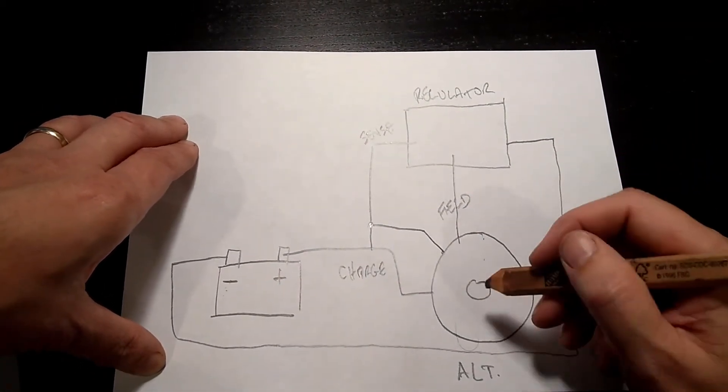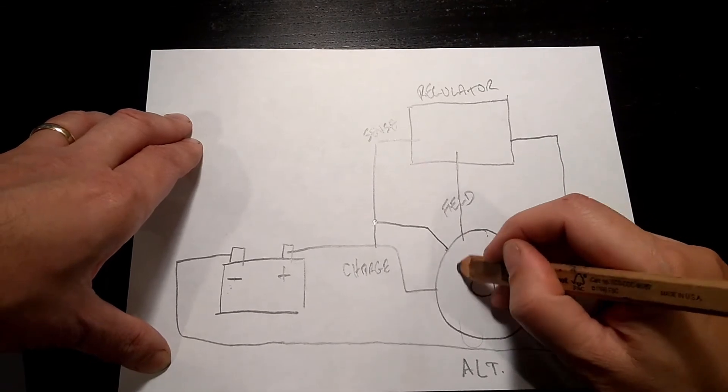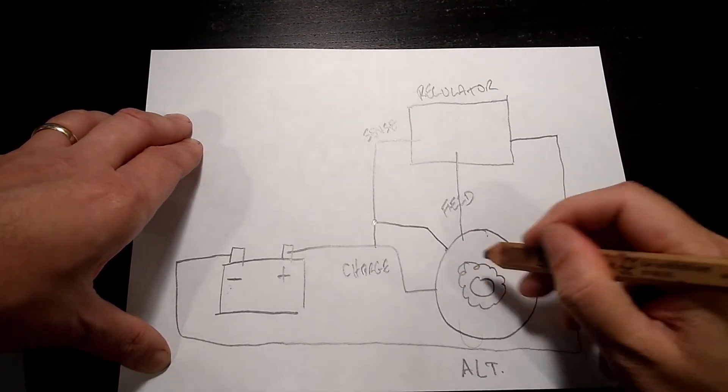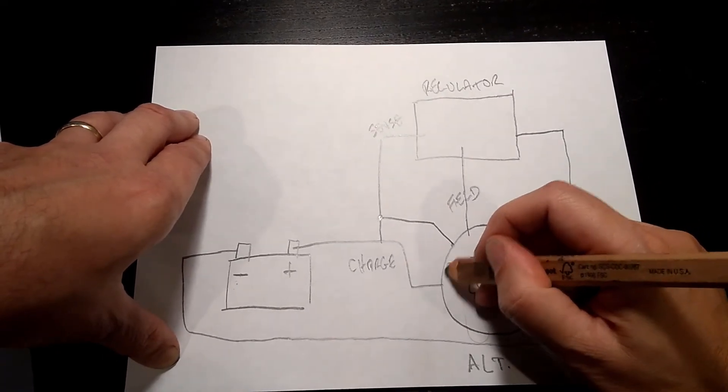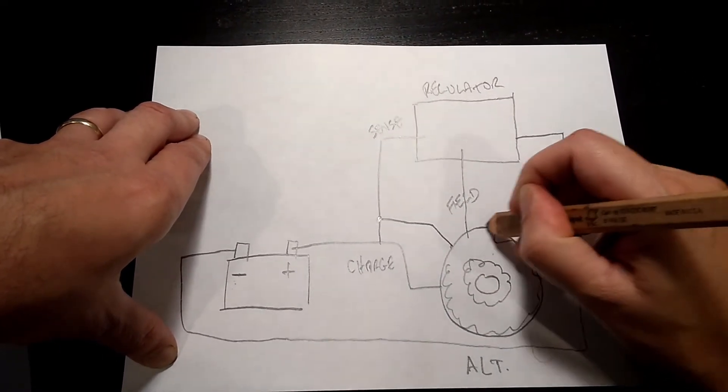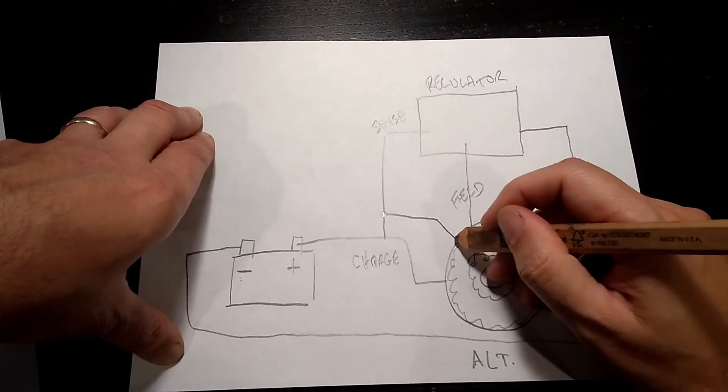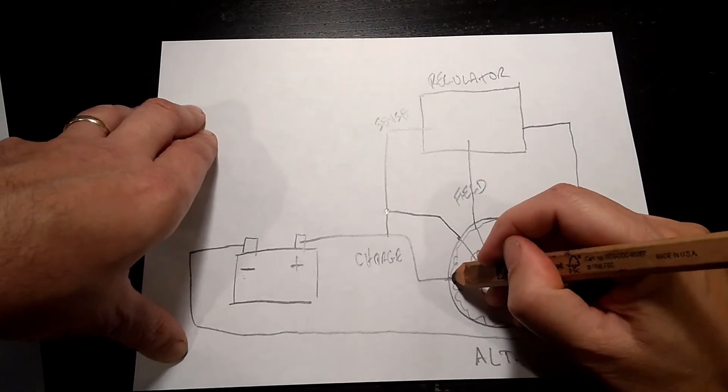Inside the alternator is really simple. We have some coils that are connected to the part that spins, some copper wire coils, and some copper on the outside. The field wires are connected here, and the charge is connected here.